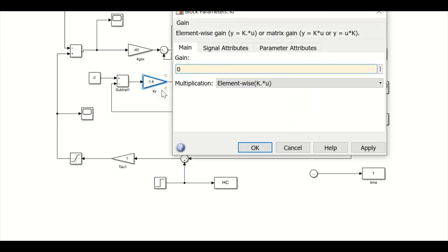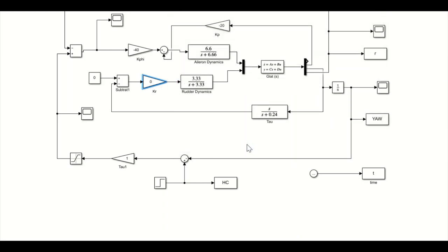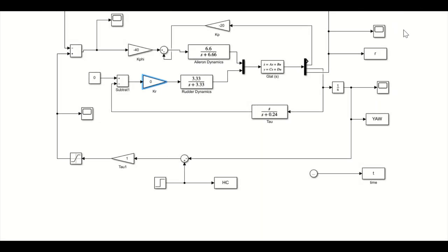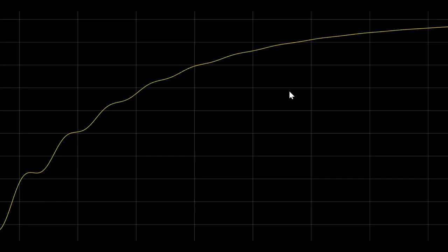If we were to switch the yaw damper off by setting this parameter here to zero, you can then run it again and see the effect of not having the yaw damper in. This time we can see the system has got quite a bit of oscillation here, significant amounts of movement.